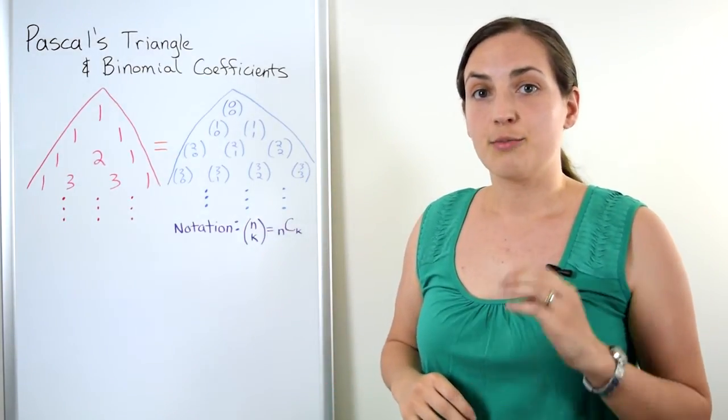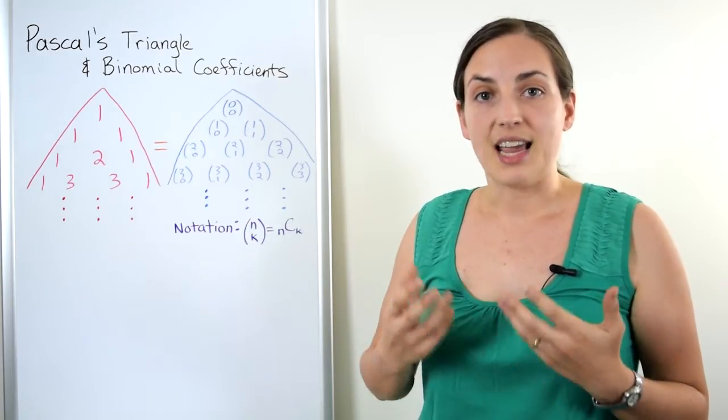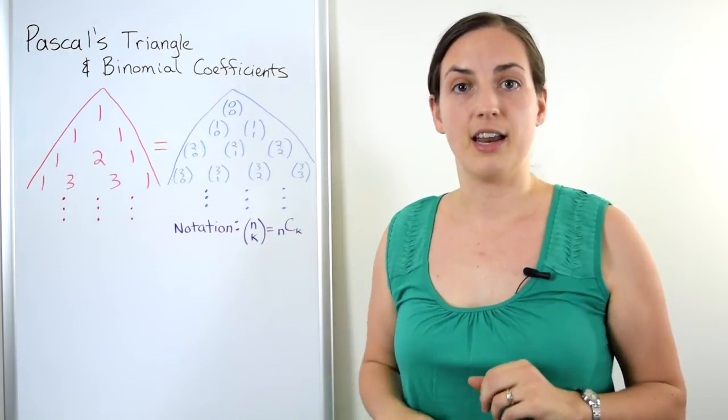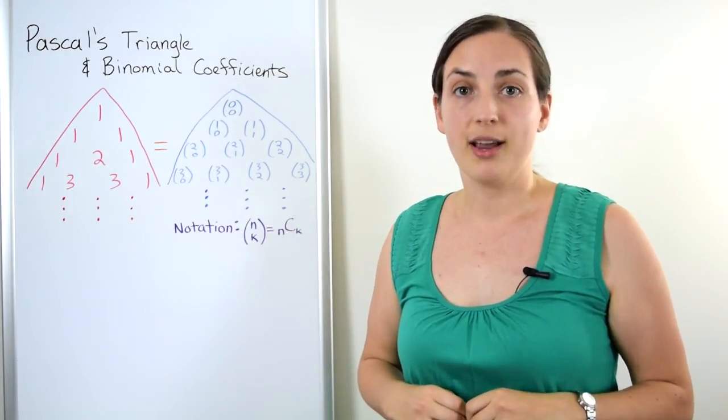In this video what I'm going to do is prove to you why these numbers n choose k turn up to be the coefficients in the expansion of a plus b to the power of n. It uses a combinatorial proof and we're going to explain how.